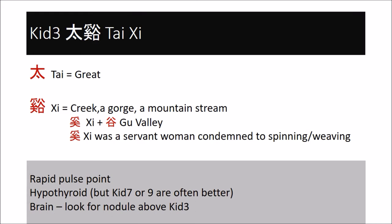Kidney three is by dogma meant to be the point of choice for hypothyroid patients, but I find this is rarely the best point for them. The kidney channel is the main channel to treat for thyroid problems, because the kidney channel circles the throat and the thyroid is a gland and therefore belongs to the kidney main. However, I find that kidney seven or kidney nine will tend to do a better job for hypothyroid patients. The official guidelines are that kidney three is for hypo, kidney seven or seven and ten for hyper, and kidney nine for goiter. In my own practice, it tends to be kidney seven or kidney nine for either hyper or hypo.